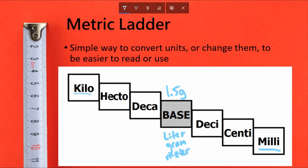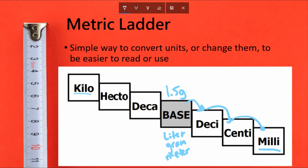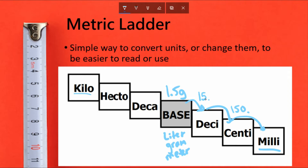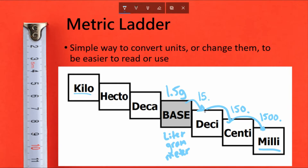Starting with 1.5 grams, say we're going to move down to milligrams — that's three steps down the ladder. If we move to the right or down, we move our decimal point one spot to the right for each step. So 1.5 becomes 15 at decigrams, then 150 at centigrams — we add a zero since there's no digit there — and then 1,500 at milligrams. It's like multiplying by 10 every time we go down the ladder.